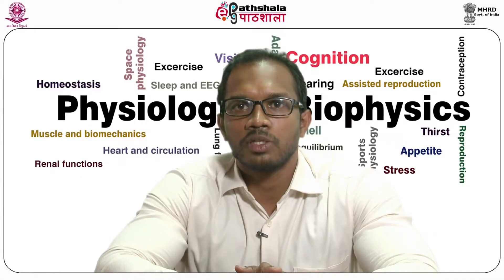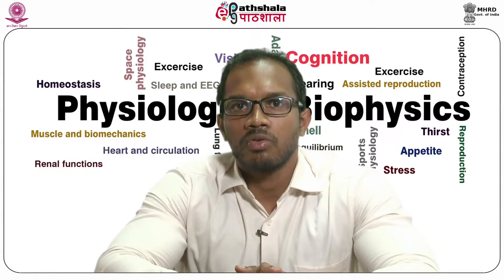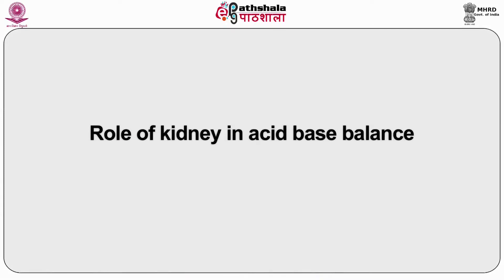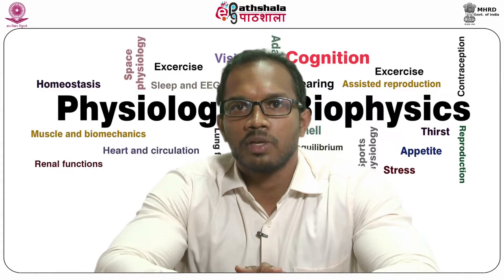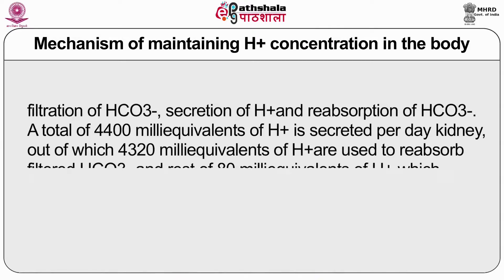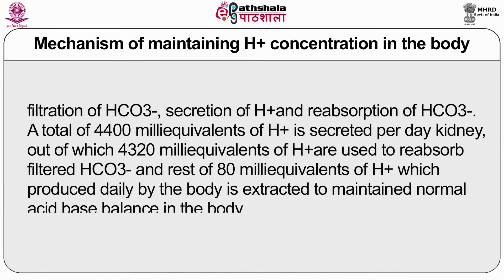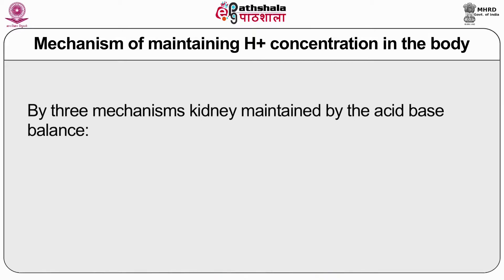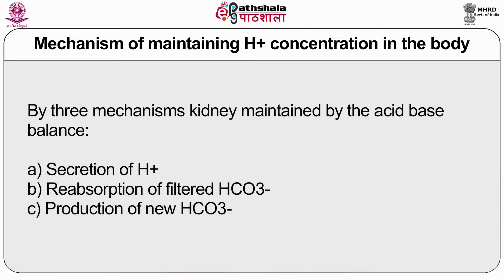Respiratory disturbances can also lead to pH disturbance — for example, respiratory acidosis. The kidney can balance disturbances in acid-base balance by forming either acidic or basic urine. In normal conditions this balance is maintained by appropriate filtration of bicarbonate, secretion of H+ ions, and reabsorption of bicarbonate. A total of 4400 milliequivalents of hydrogen ion is secreted per day by the kidney, of which 4320 milliequivalents are used to reabsorb filtered bicarbonate, and the remaining 80 milliequivalents of H+ are produced daily to maintain normal acid-base balance. The kidney maintains acid-base balance by three mechanisms: secretion of H+ ions, reabsorption of filtered bicarbonate, and production of new bicarbonate.